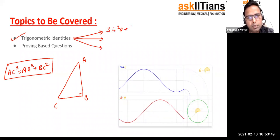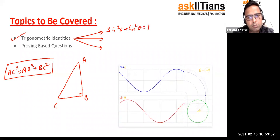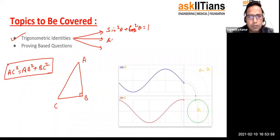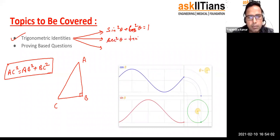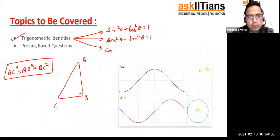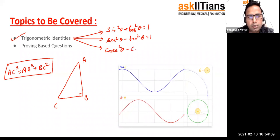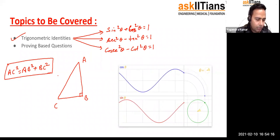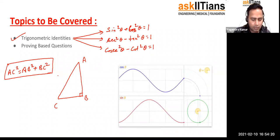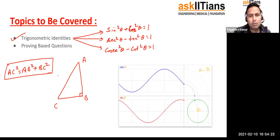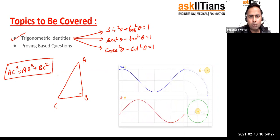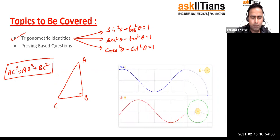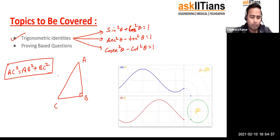The first identity is: sin²θ + cos²θ = 1. The second one is: sec²θ − tan²θ = 1. The third one is: cosec²θ − cot²θ = 1. These are the three identities which you need to remember, and we are going to utilize them in proving questions. It is easy to remember them, but we should also know their proof — how do they come.